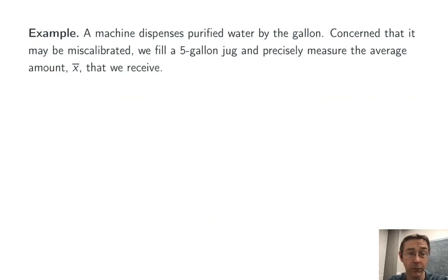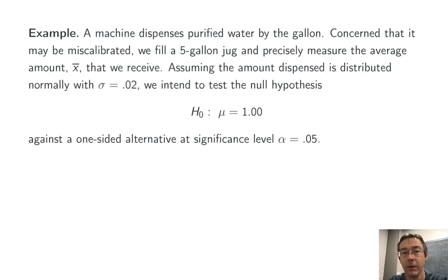Here's the example we're going to work through. A machine dispenses purified water by the gallon. We're concerned that it might be miscalibrated, and so we fill a 5-gallon jug and precisely measure the average amount, x bar, that we receive.